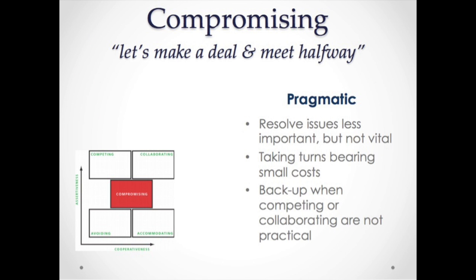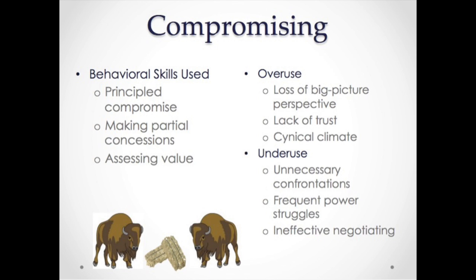The compromising mode of handling conflict can be characterized as 'let's make a deal and meet halfway.' It is a very pragmatic style that's important when resolving issues that are important but not vital. It allows parties to take turns bearing small costs, and it can be used as a backup when competing or collaborating are not practical. Behavioral skills include coming to a principled compromise, making partial concessions, and assessing the value of decisions. Overuse can lead to a loss of big picture perspective, a lack of trust, or a cynical climate. However, underuse can lead to unnecessary confrontations, power struggles, and ineffective negotiating.